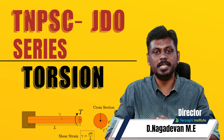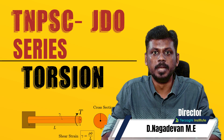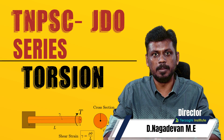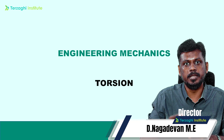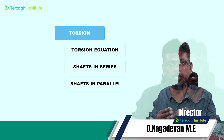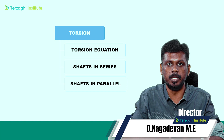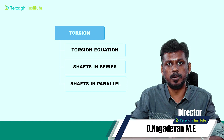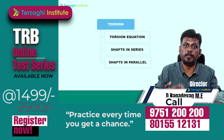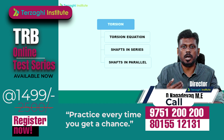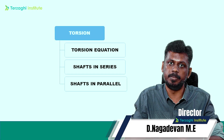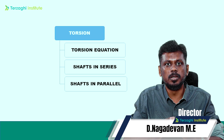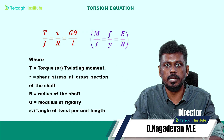Let's go to this JDO Series. As mentioned, there is a formula in torsion: T/J = τ/R = Gθ/L. That's why we connect the shaft in series and the shaft in parallel. T by J is equal to tau by R is equal to G theta by L.